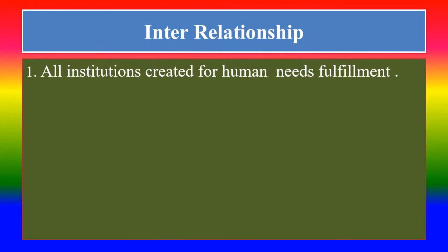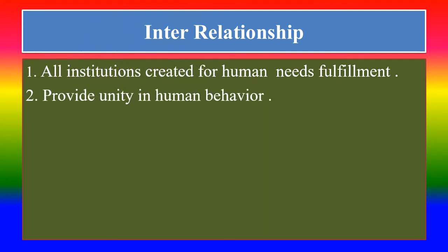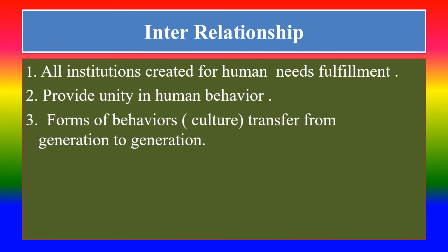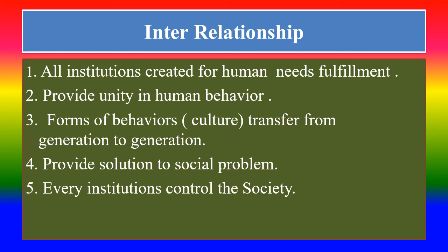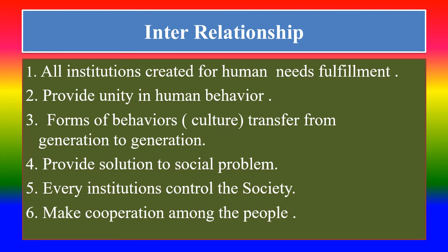Every institution is interrelated with and depends on each other. First, all institutions are created for human needs fulfillment. Second, they provide unity in human behavior. Third, forms of behavior and culture are transferred from generation to generation. Fourth, they provide solutions to social problems. Fifth, every institution controls the society. Sixth, they make cooperation among the people.